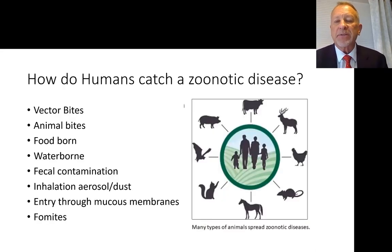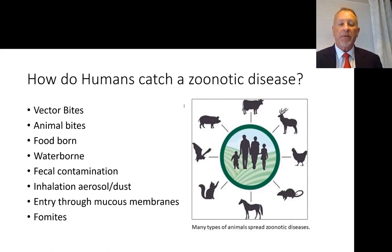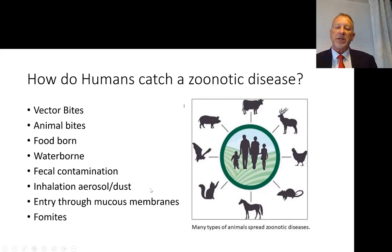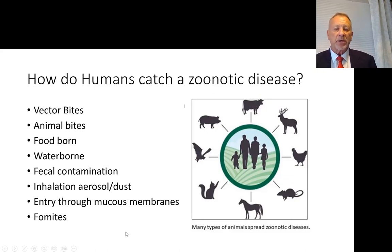How can we catch a disease from an animal? Some of them are common sense and you're aware of them — maybe some are just food for thought. Vectors, animal bites, bug bites, you can swallow it. It could be food, it could be water, fecal contamination, inhalation, aerosol, dust — these are everyday environmental challenges for folks working in the ag sector. And your mucous membranes — your eyes, your nose, your mouth — are pretty much open doors for bugs and germs to get into your body. Any way that you can mitigate that potential goes a long way toward protecting yourself.